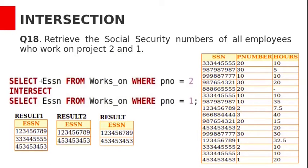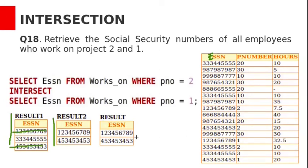The equivalent SQL query is: SELECT ESSN FROM works_on WHERE P_number = 2 INTERSECT SELECT ESSN FROM works_on WHERE P_number = 1. The first query result has three rows and the second has two rows. We need the rows present in both relations, so two SSN values that appear in both results are included in the final output.